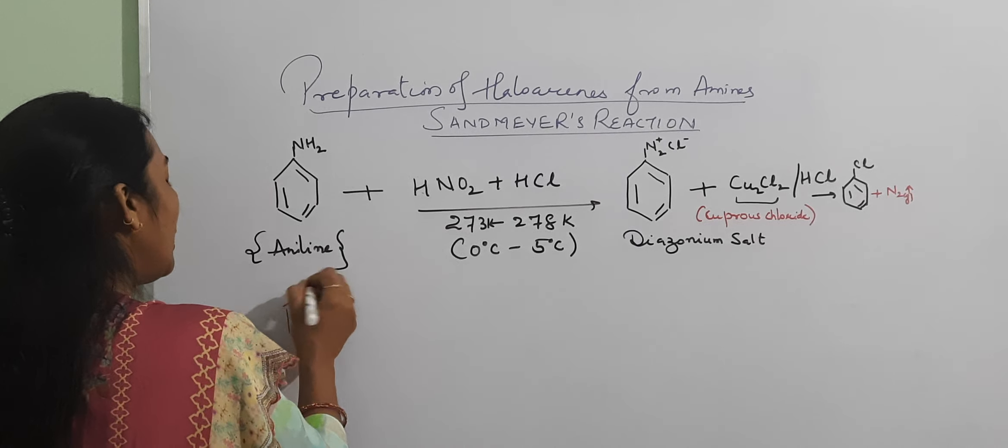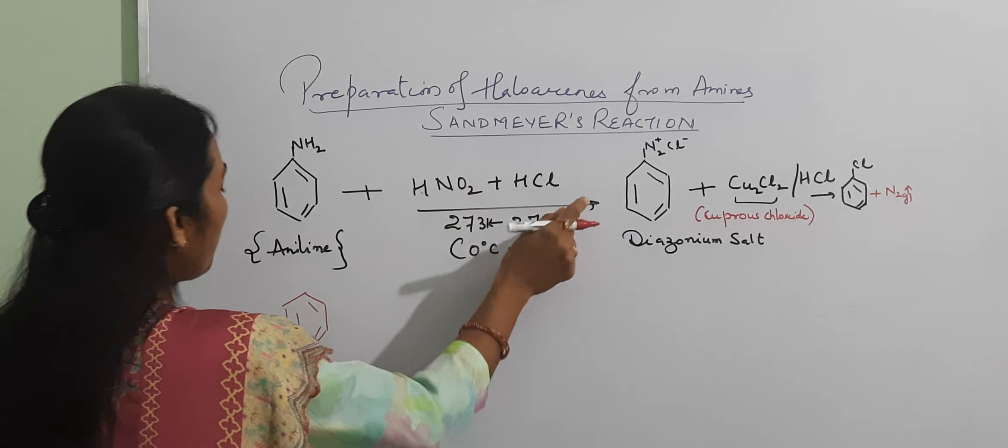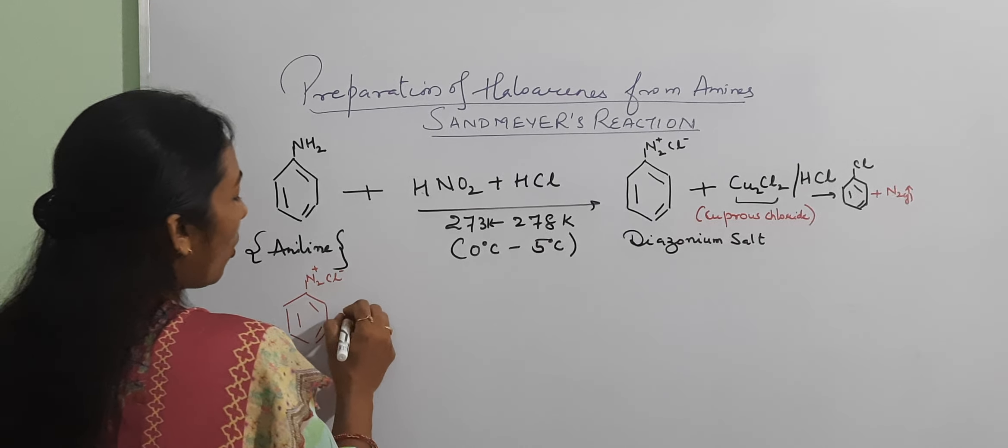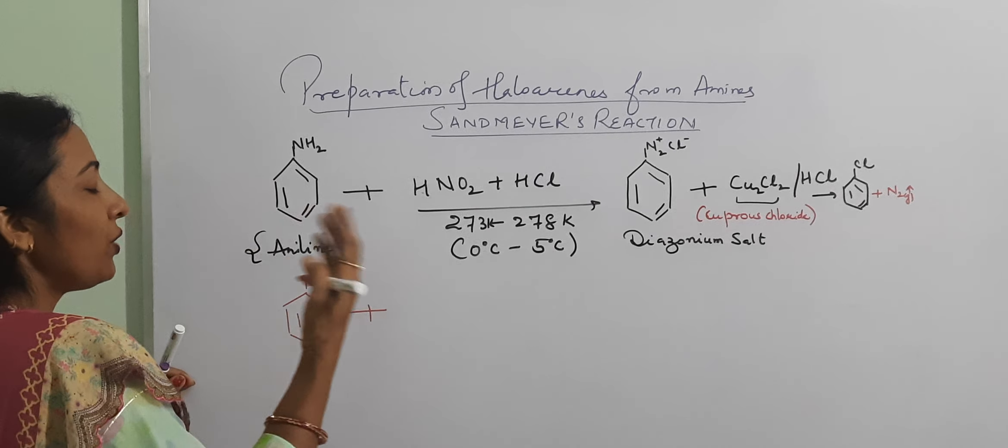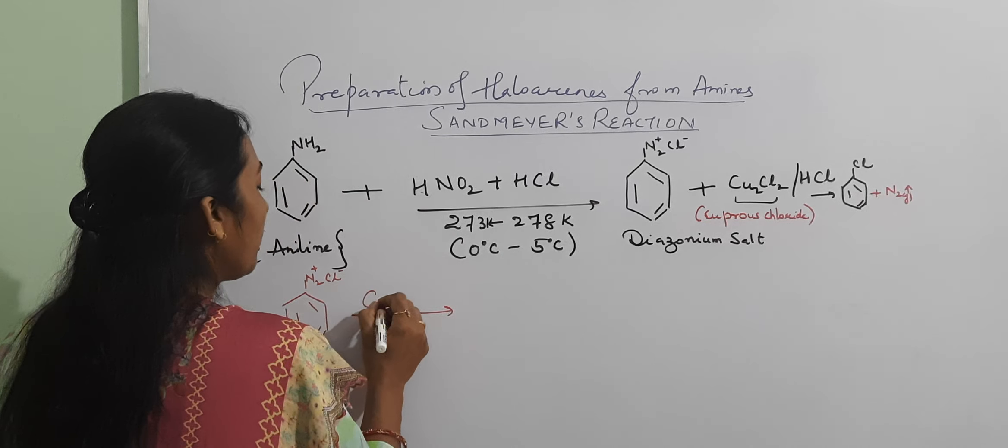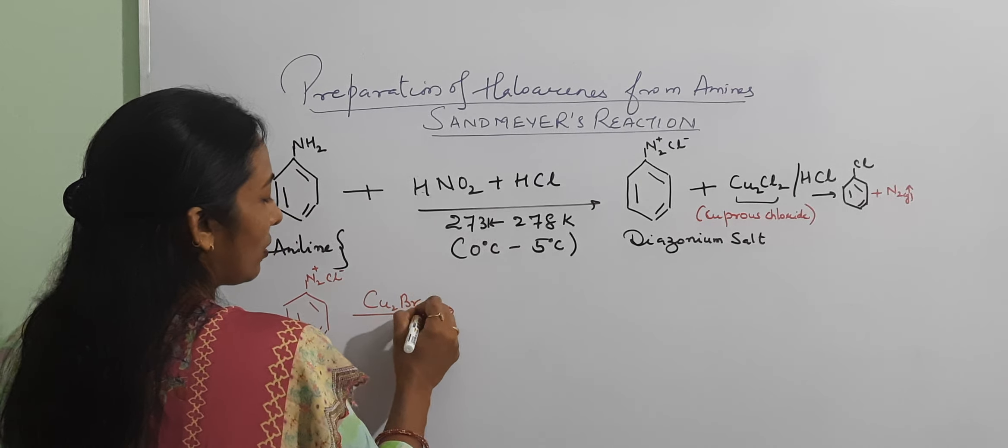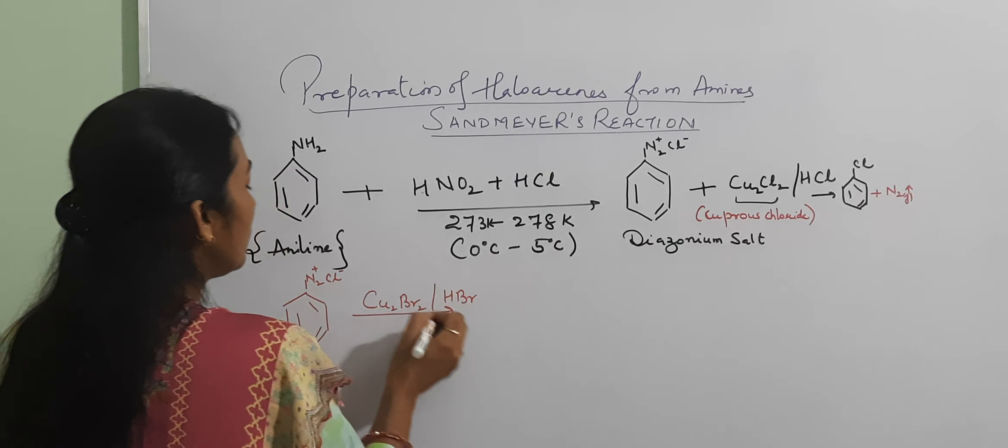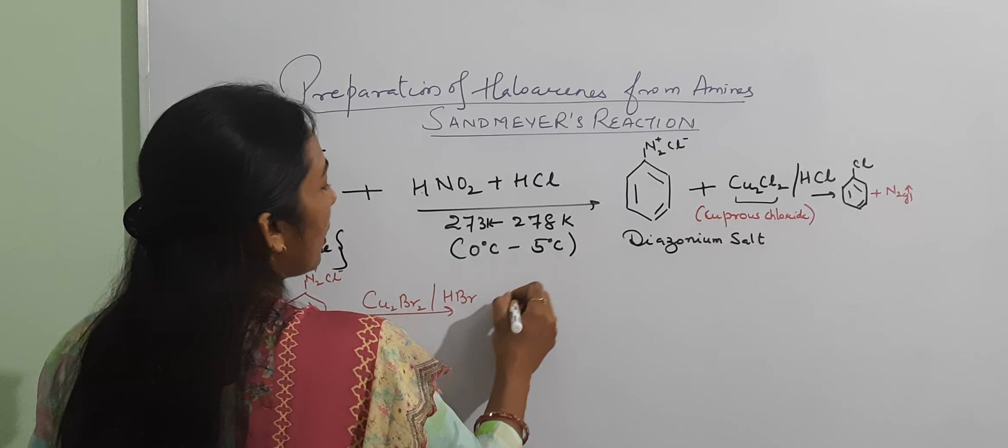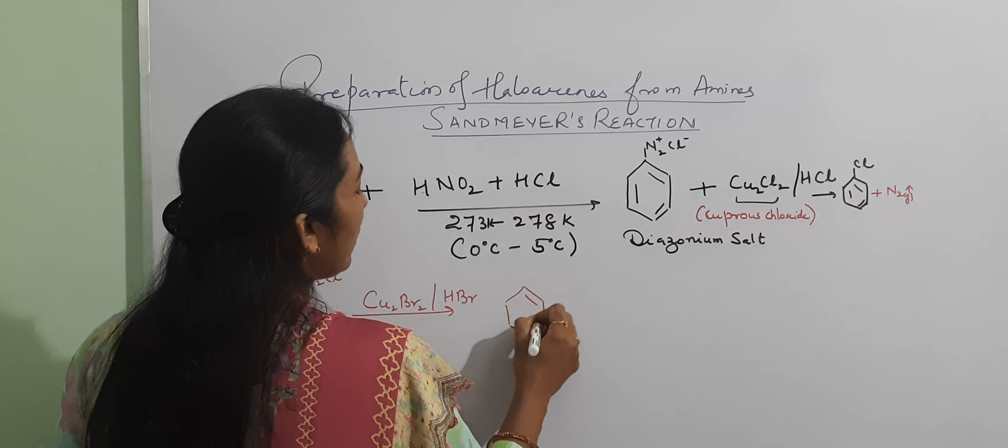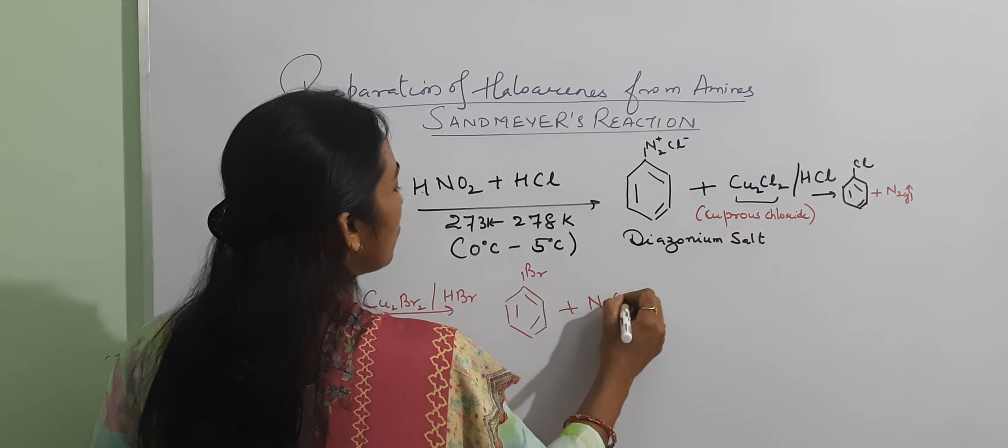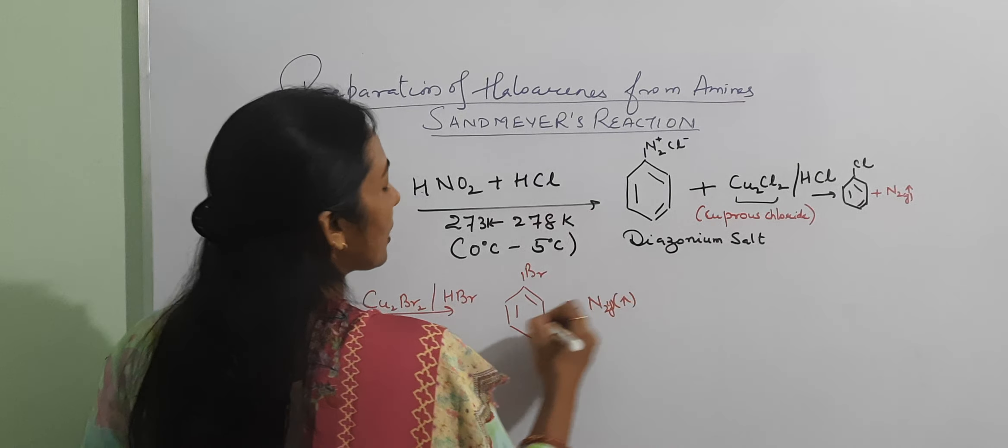So we have the same method here. Bromobenzene, what will we react for this form? Cuprous bromide and we will also have mineral acid which is the hydrohalic acid. We are getting the bromobenzene plus N2 gas which will escape from here.